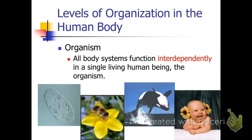When we put all these systems together, we get the organism. In a regular general biology class, that organism could be an amoeba, a flower, a bumblebee, or a whale. In this course, we're dealing with human anatomy, but don't forget that other organisms are made up similarly of a hierarchy.